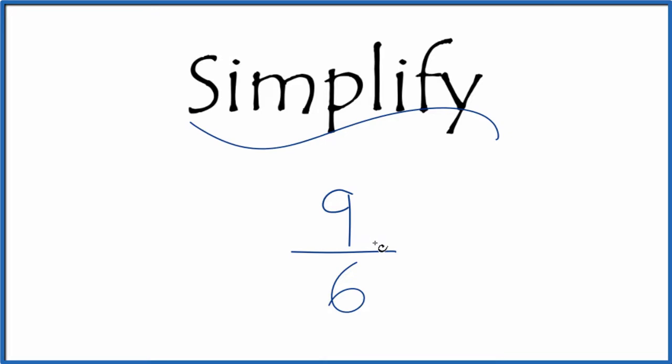And there's kind of two things we can do with this. This is an improper fraction. The number on top, the numerator, is larger than the denominator. So we could write it as a mixed fraction, but we could also reduce this since there's a common factor for 9 and 6.